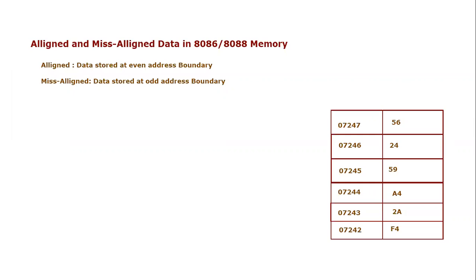In this video tutorial we are going to consider another important concept of memory attached to the 8086 or 8088 microprocessor, and that is the concept of aligned and misaligned data. Aligned data, by the bookish definition, is data stored at an even address boundary, and misaligned data is data stored at an odd address boundary. We have already discussed even and odd address boundaries in the last tutorial.